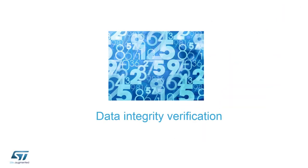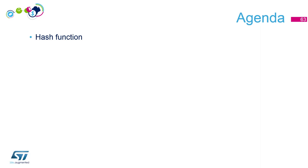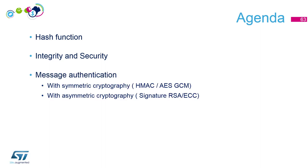Let's first define our agenda. We will start with what is a hash function — it's something really important for the integrity check. Then we'll discuss integrity and security. In the last part, we'll define what is message authentication and see how it's addressed with symmetric cryptography and asymmetric cryptography.